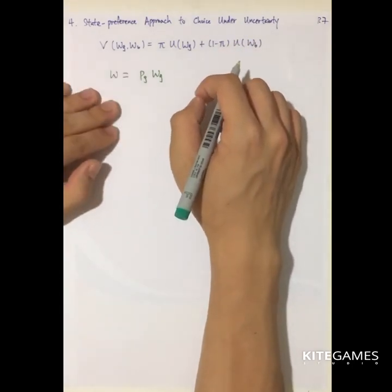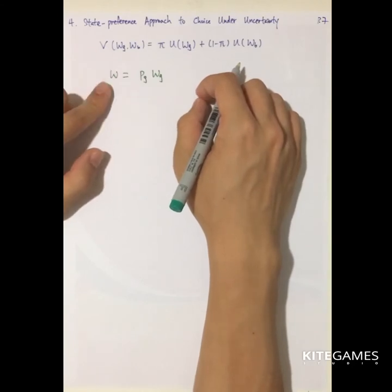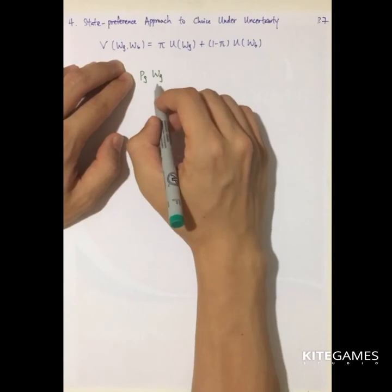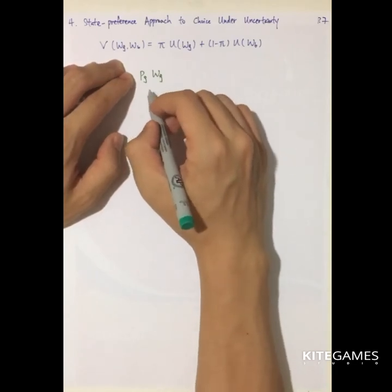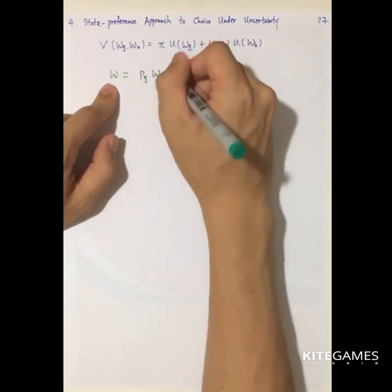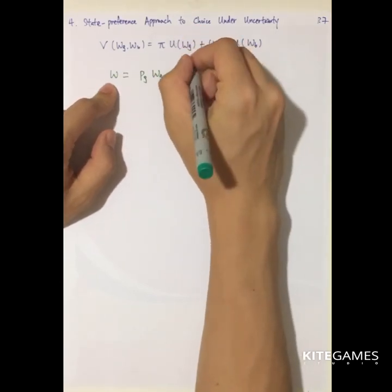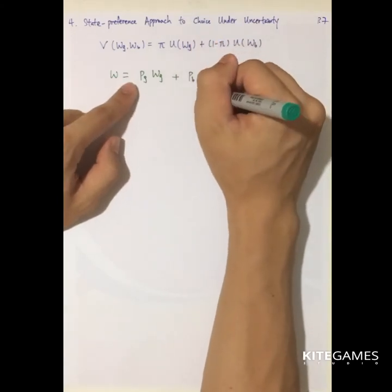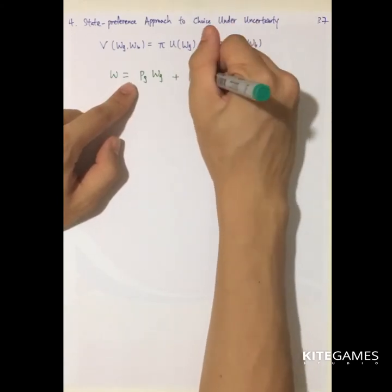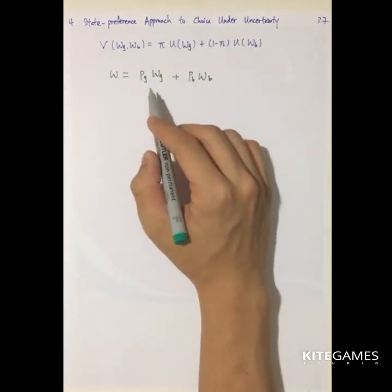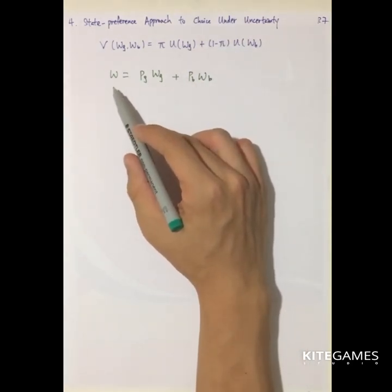So if you want to ensure tomorrow you have one unit of wealth, you can buy one PG times WG. In this case, if tomorrow is good, you will have one unit of wealth. Then plus the PB, probability of bad time, because you have some probability that tomorrow will be bad, times the wealth of bad time. So in this case, you can ensure tomorrow you have W units of wealth.